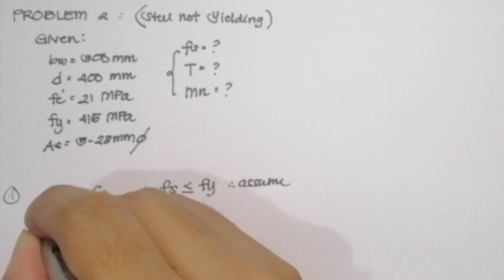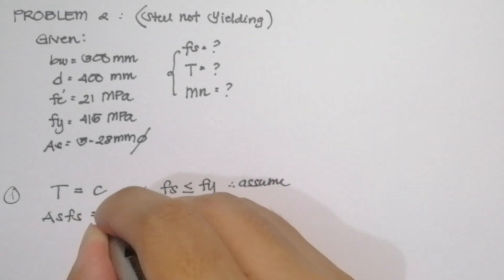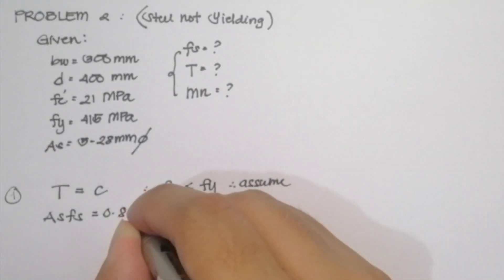So our T is equal to As·Fs since Fs is not equal to Fy. And our C is equal to 0.85·f'c·Ab for the area of the compression block.